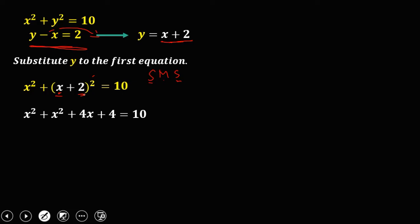Then simplify, so combine like terms. So x squared plus x squared, that's 2x squared. Then transpose this 10 to the left, that becomes negative 10, then that's equal to 0. Then simplify this 4 minus 10, that's negative 6, equals 0.